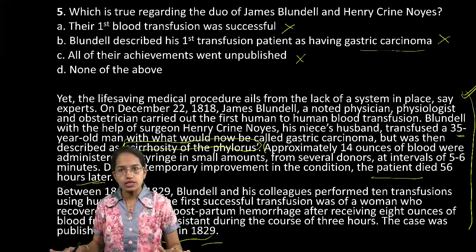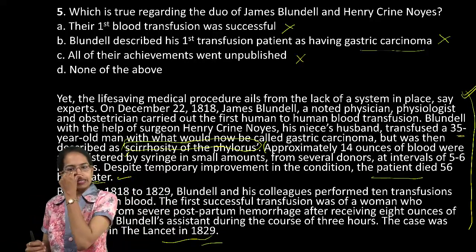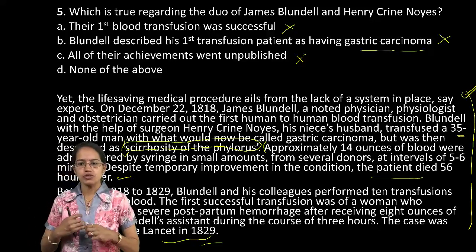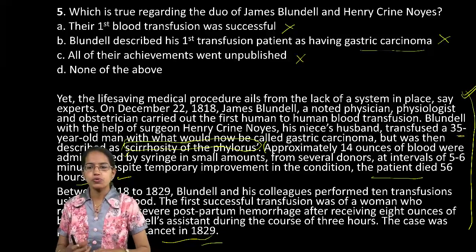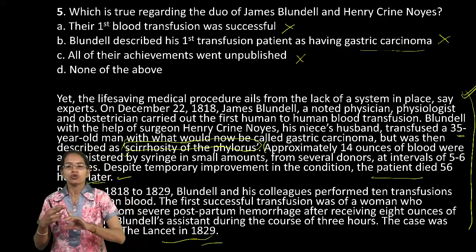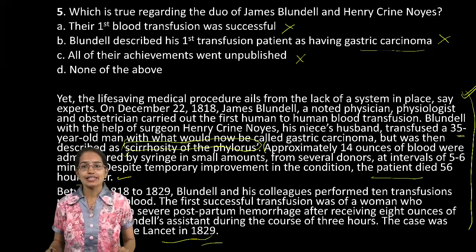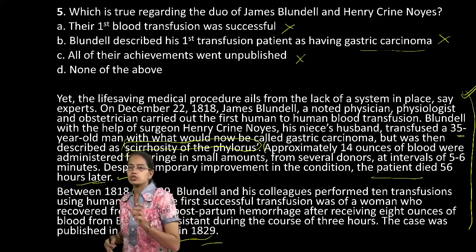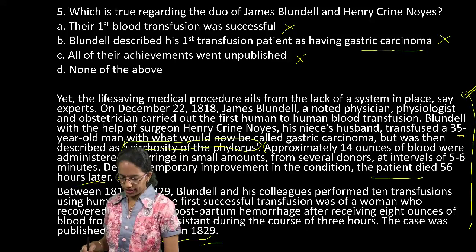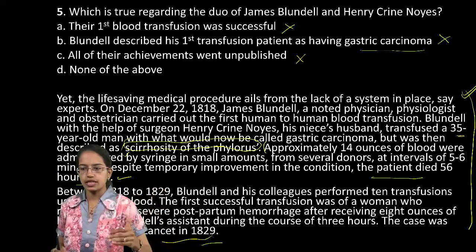Let me repeat question five again. The first blood transfusion was not successful because the patient died 56 hours later — A is incorrect. The second choice, that Blundell describes his first transfusion patient as having gastric carcinoma, is also incorrect because they didn't know the term gastric carcinoma — it is now called gastric carcinoma. All of their publications went unpublished — again incorrect, because the case was published in Lancet in 1829. The C choice is again incorrect.